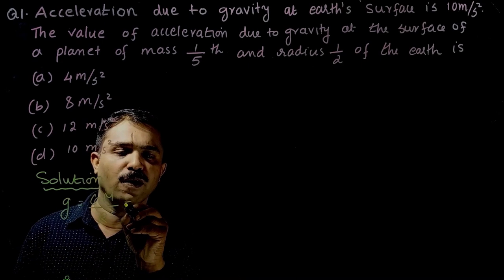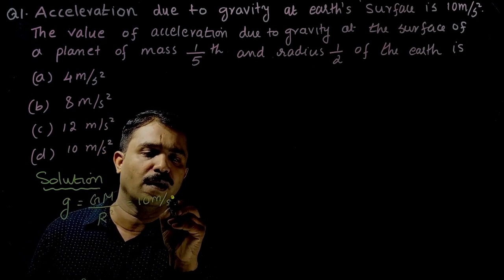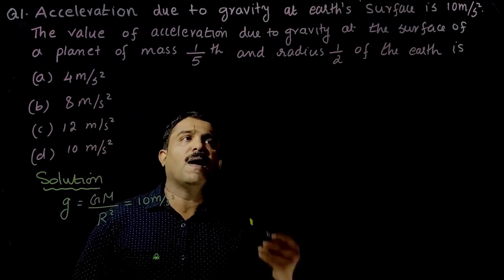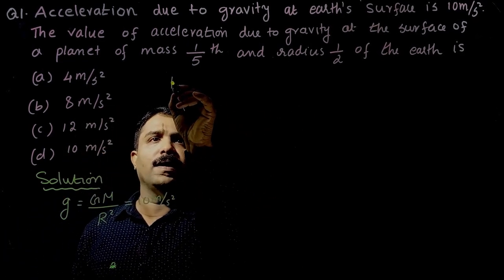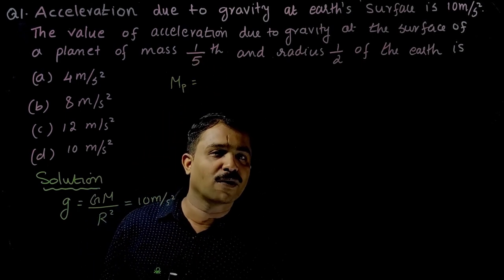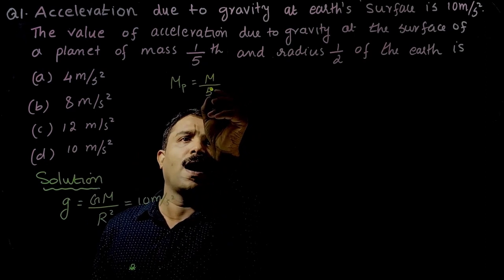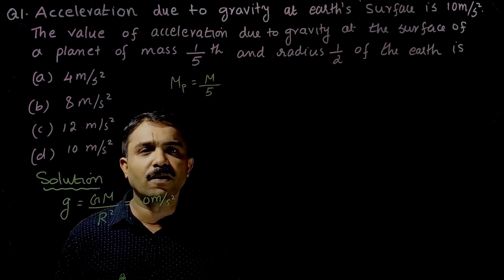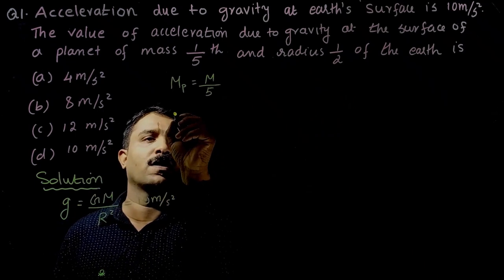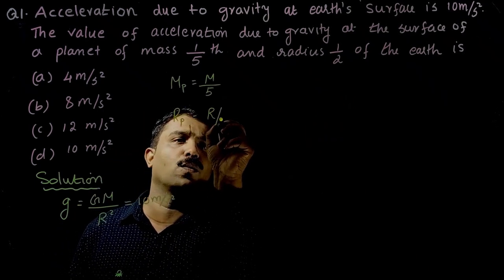Its value is given as 10 m/s². The mass of the planet is mp = M/5, and the radius of the planet is rp = R/2.